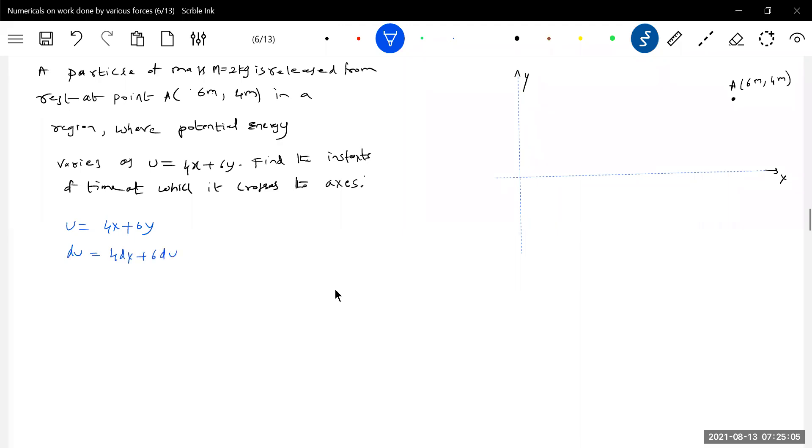Differentiating gives dU = 4dx + 6dy. Differentiating with respect to x, we get the x component of force: Fx = -dU/dx = -4 Newton, which is -4 i cap because force is a vector. Similarly, differentiating with respect to y, dU/dy = 6, so Fy = -dU/dy = -6 j cap.